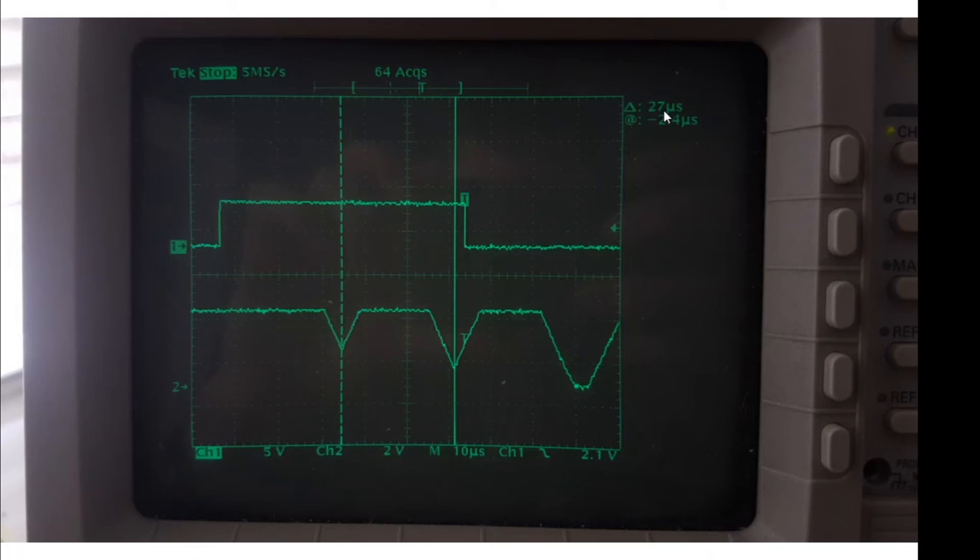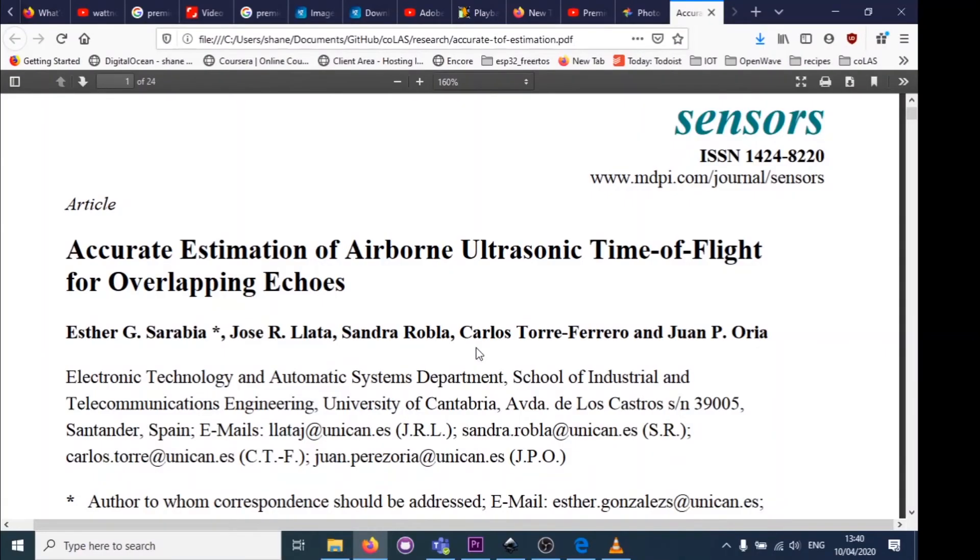The problem with using a threshold approach to detecting the ultrasonic wave is that you're looking at the receive signal and you've got a certain amount of noise. When the receive signal first starts to appear, it's very hard to determine the exact moment that it actually has arrived because it's emerging out of the noise, and the point that it emerges isn't obvious.